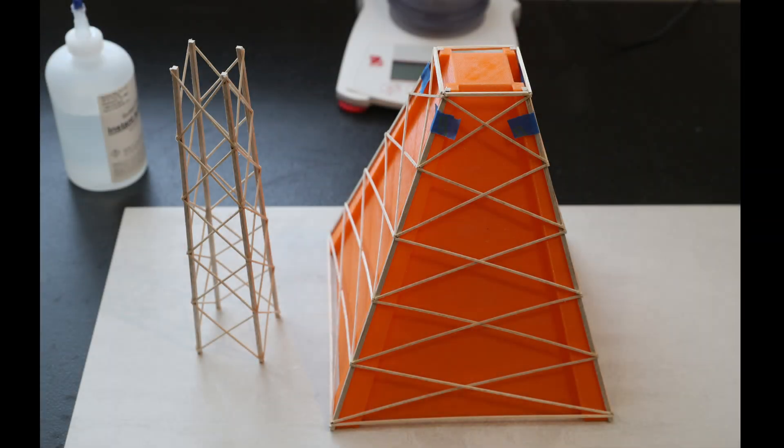Here is the completed base and column ready to be connected together. I decided to lightly tape the base to the jig and then just apply glue to the top of the legs and put the column in place.